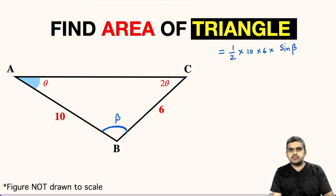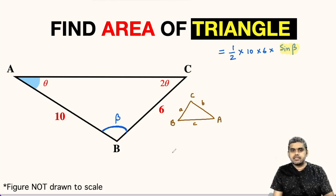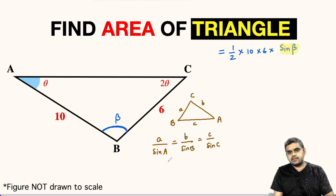Now our main focus will be to find the value of sine beta. For that, let us apply law of sines in triangle ABC. We know that if we have a triangle where the three sides are a, b, and c respectively, with vertices A, B, and C, then according to law of sines, a upon sine of angle A is equal to b upon sine of angle B is equal to c upon sine of angle C.